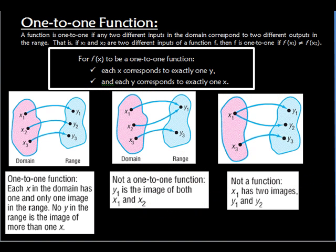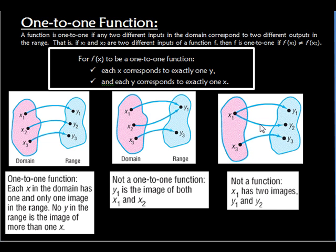Let's start with a definition of a 1-to-1 function. Basically, for f to be a 1-to-1 function, each x corresponds to exactly one y, and each y corresponds to exactly one x. So if we look at this first picture, this is a 1-to-1 function, because x1 goes to y1, x2 to y2, x3 to y3, and so on. The next one is not a 1-to-1 function because x1 and x2 go to y1. And remember, this last one is not a function at all, because x1 goes to y1 and y2 at the same time.